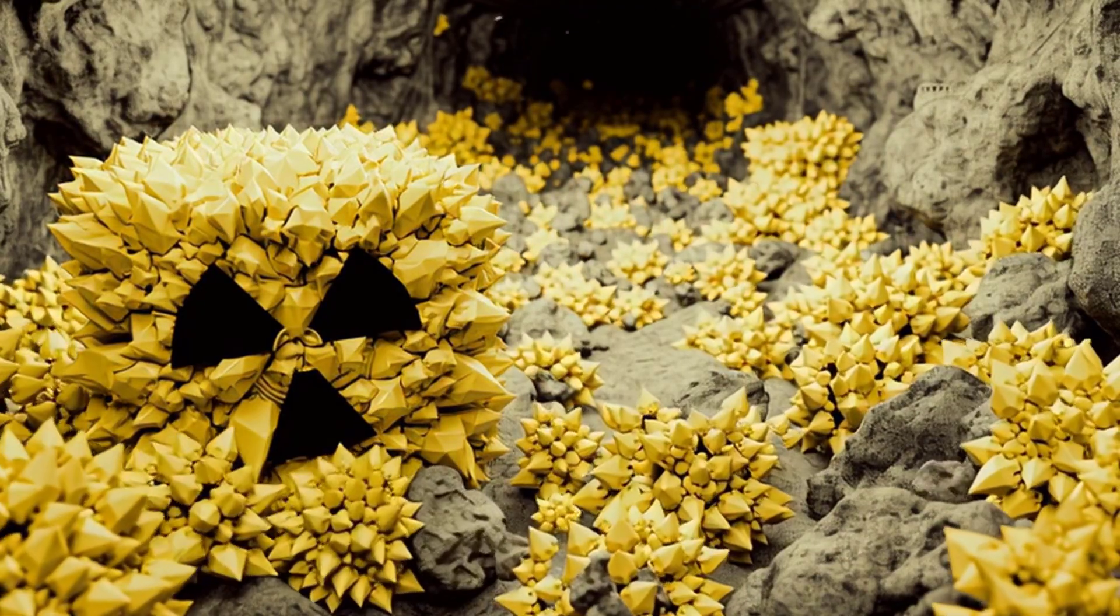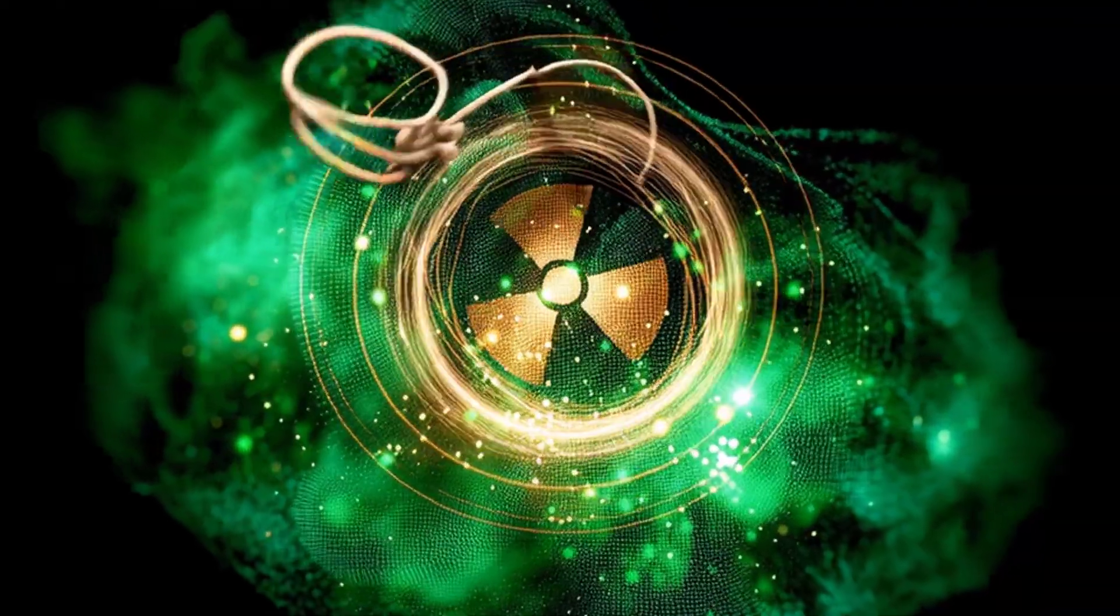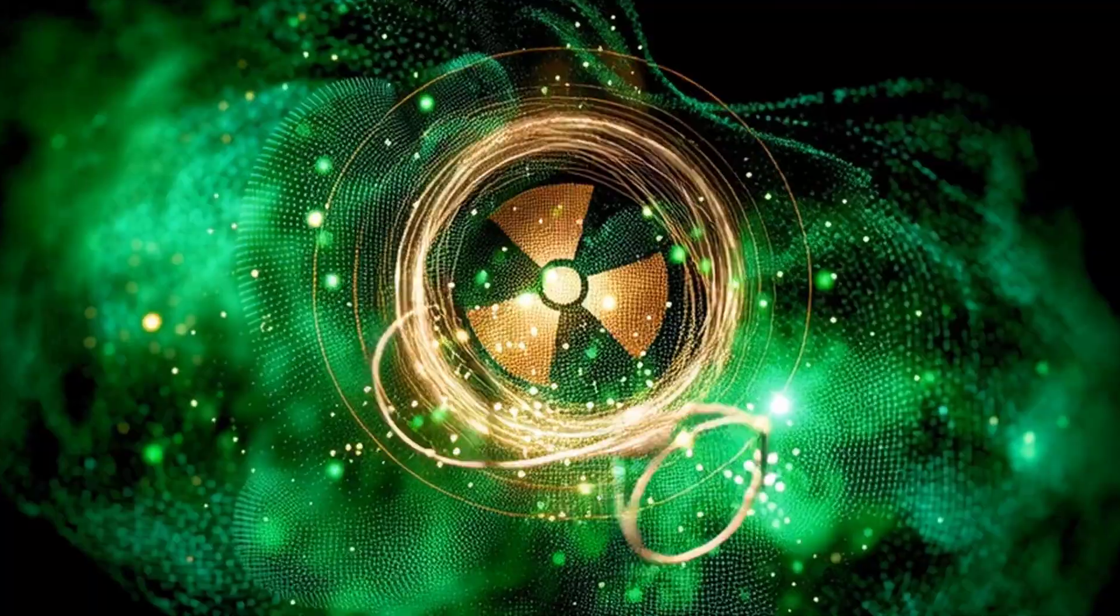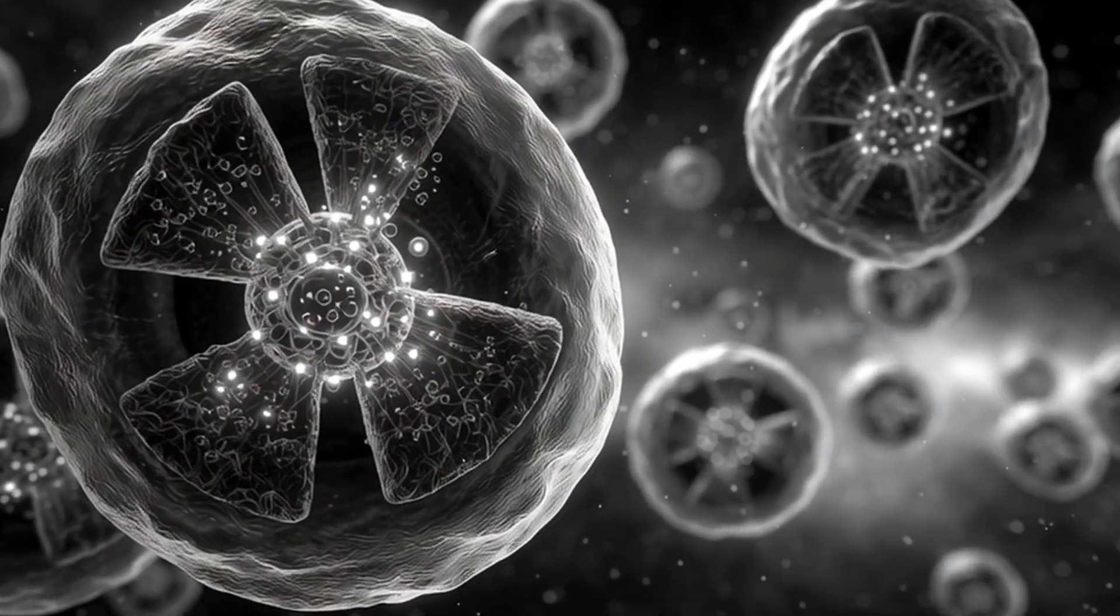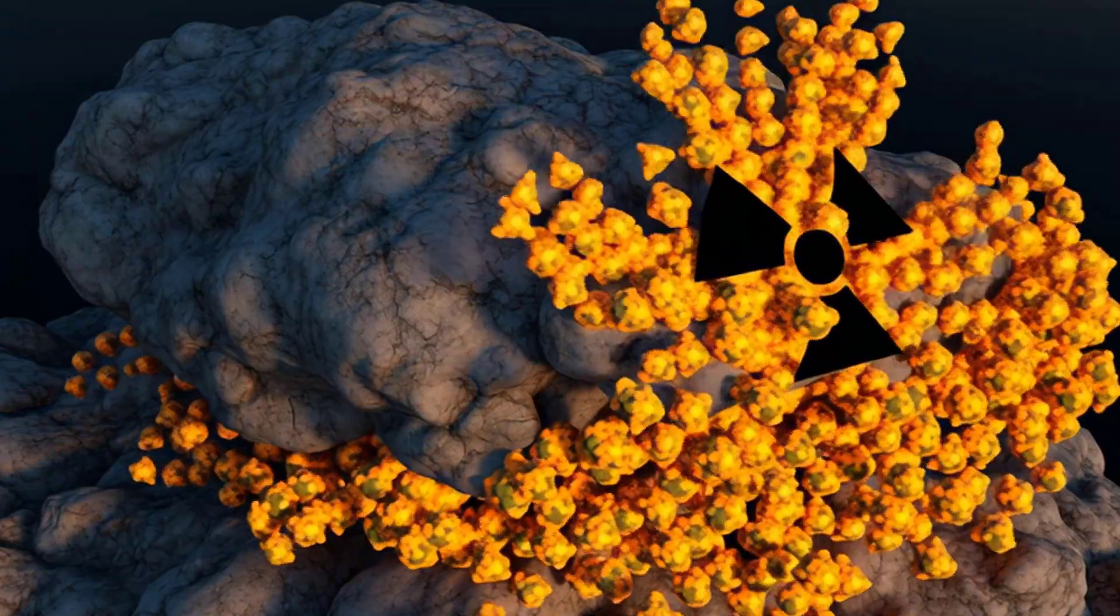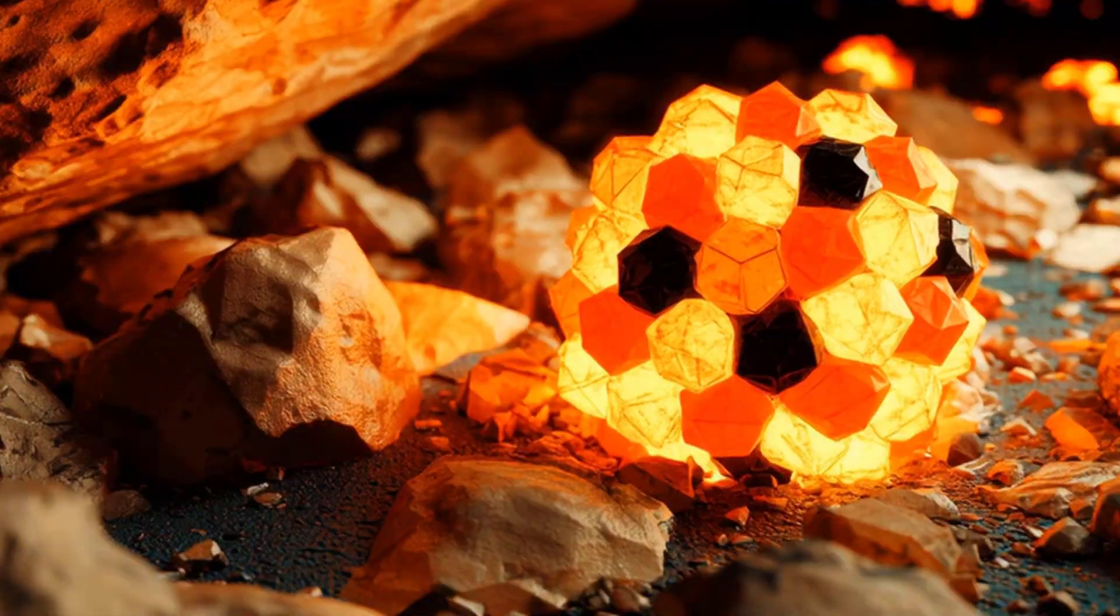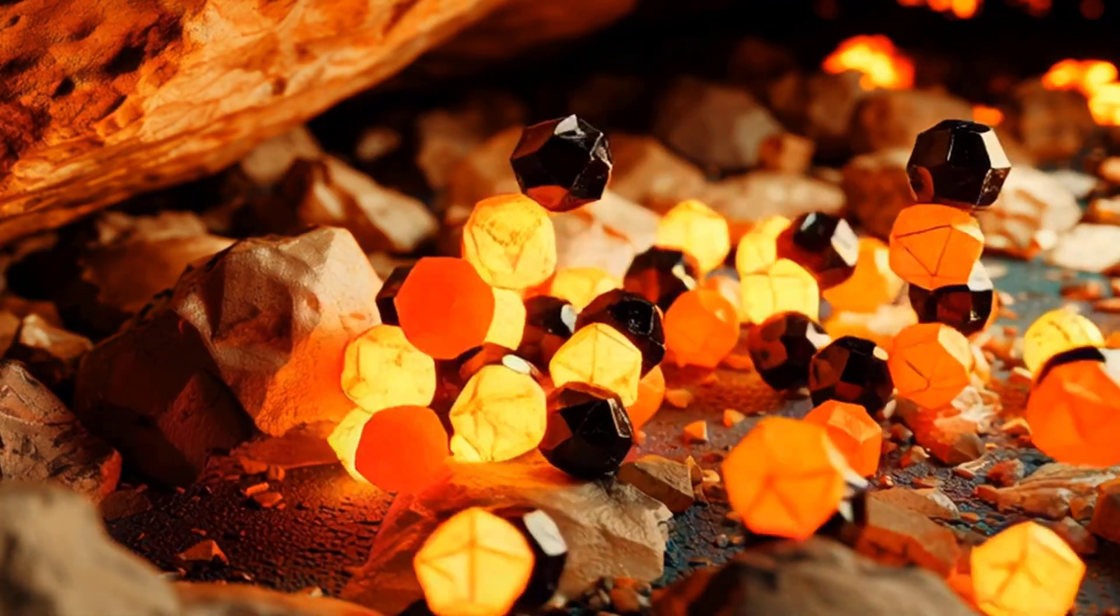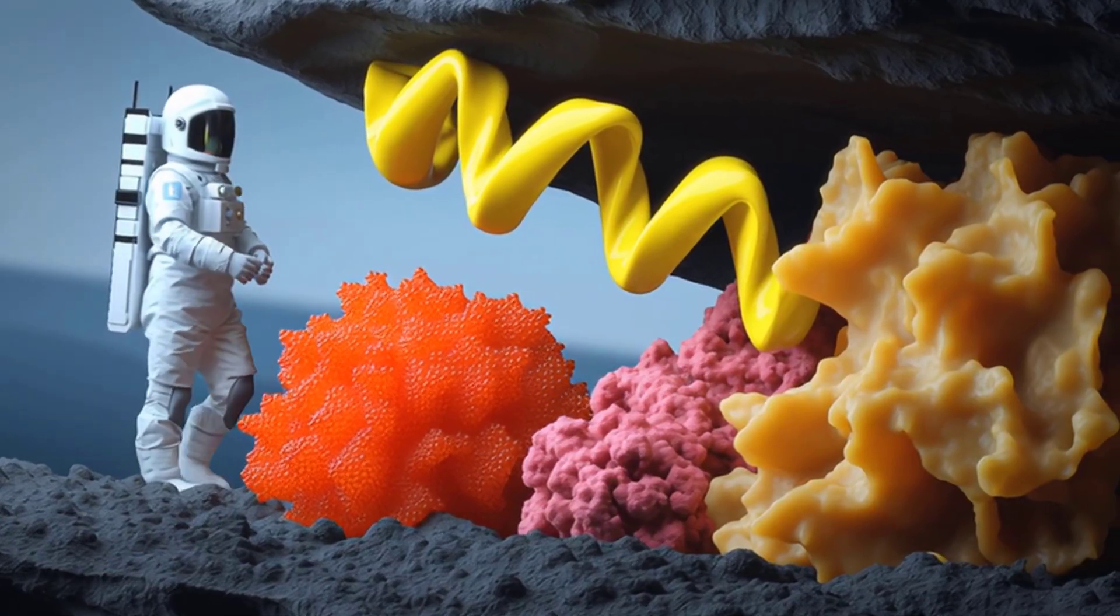The challenges are real. Specialized reactors such as molten salt reactors are needed to make the thorium cycle efficient, and these are not yet widespread. Handling uranium-233 is tricky because it emits a particularly strong kind of radiation, including gamma rays, that requires heavy shielding. And since most of the world's nuclear infrastructure was built for uranium, switching to thorium would mean massive investments.